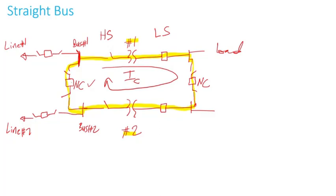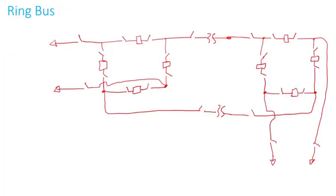In a previous video — part four — I showed how to calculate that circulating current. It's important when you have two transformers connected through straight buses, with the high side tied through a normally closed breaker and the low side also tied through a normally closed breaker, to make sure the transformers are not going to cause any circulating current.